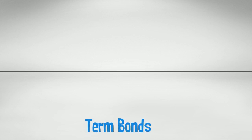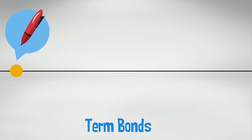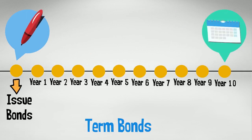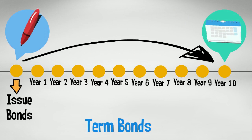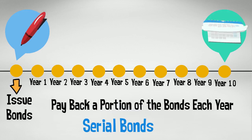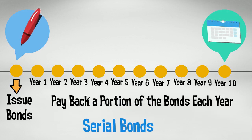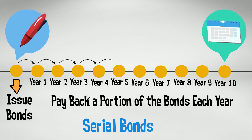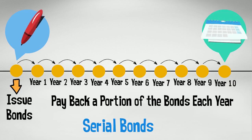Bonds can be term or serial. Term bonds are repaid all at a single maturity date. For example, a company issues a million dollars in bonds that will be due in 10 years — the company will repay the million dollars at the end of 10 years. Serial bonds are repaid in installments rather than at one time. For example, the company issues those million dollars in bonds but instead of being due in 10 years, they will repay a hundred thousand dollars each year for the next 10 years.